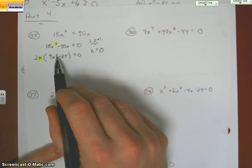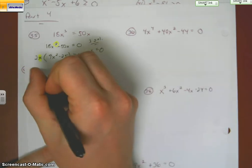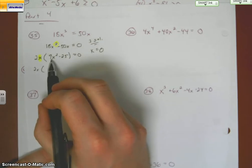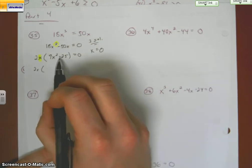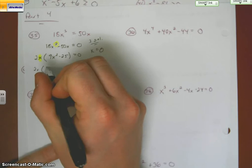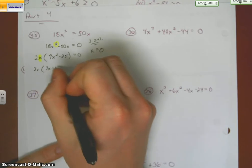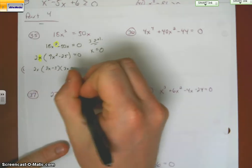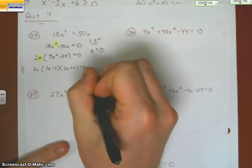which will come from this guy, which we can go ahead and factor, because 9 is a perfect square, 25 is a perfect square, and I have a minus sign. So 3x minus 5, 3x plus 5 equals zero.